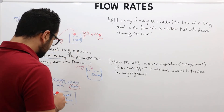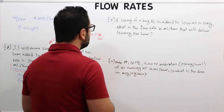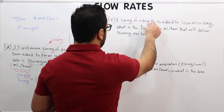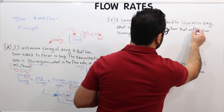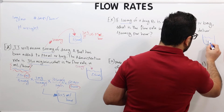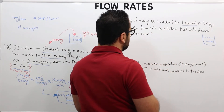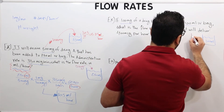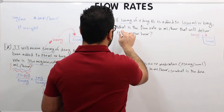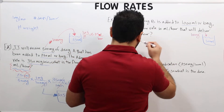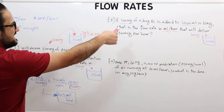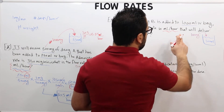Let's jump into question number two. If 100 milligrams of drug B is added to 1000 milliliters, we have a 1000 mL IV bag with 100 mg of drug B inside. The question asks: what is the flow rate in milliliters per hour? These are the final units — milliliter per hour — just like in the previous question. The flow rate must deliver 400 micrograms per hour.